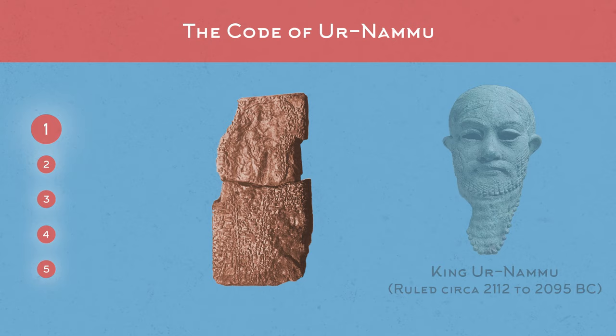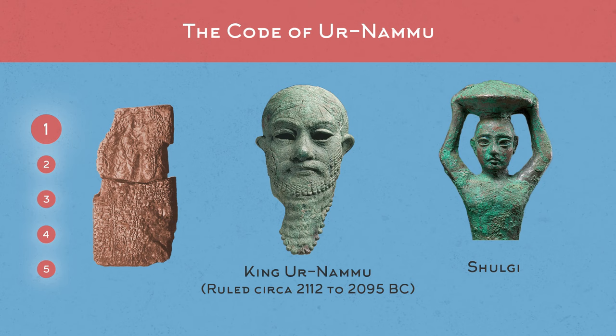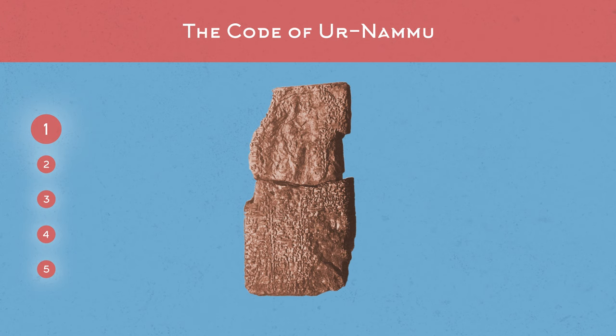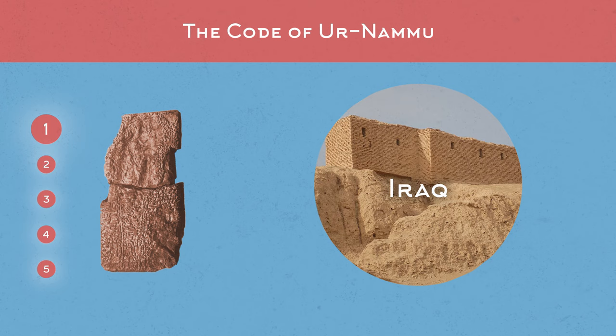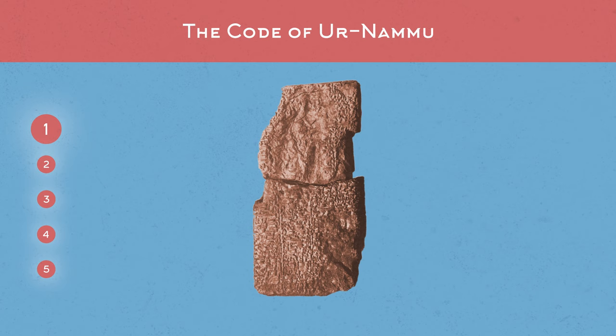The Code of Ur-Nammu takes its name from King Ur-Nammu of Ur, who ruled circa 2112 to 2095 BC, although there is historical debate whether he wrote the laws or if it was in fact his son, Shulgi. This code is the oldest comprehensive surviving legal code we have, although we do have fragments of older ones like the Code of Urakagina. Two surviving fragments were found at Nippur, now known as Iraq, and then later in 1965, further tablets found at Ur allowed historians to discern 32 of the 57 laws, of which seven refer to instances of slaves and slavery.